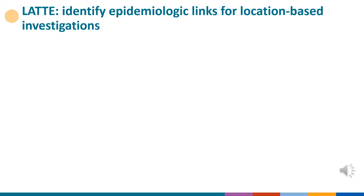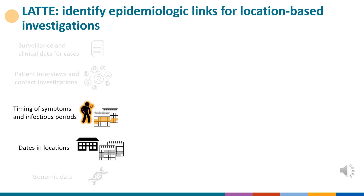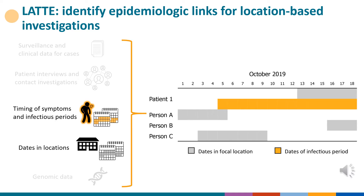The next tool, the Location and Time to Epi algorithm, or LATTE, is primarily an automated data analysis tool designed to identify epidemiologic links for location-based cluster and contact investigations. LATTE analyses can involve data on the timing of symptoms and infectious periods of patients and dates and locations for patients and potential contacts. LATTE output files include lists of pairs of persons who overlapped at focal locations, a summary of total days of overlap for each person in the analysis, and timeline visualizations showing infectious periods and time spent in each location. This information can be used to identify and quantify overlaps between persons at locations, including overlaps during infectious periods when TB transmission could have occurred.